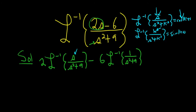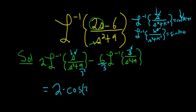Here we have s on top, and k is 3 because 9 is 3 squared, so the first term gives cosine of 3t. For the second term, it has a number on top, so k is 3 — we need to put a 3 in the numerator, and compensate by putting it in the denominator. So this equals 2 cosine(3t) minus 2 sine(3t).